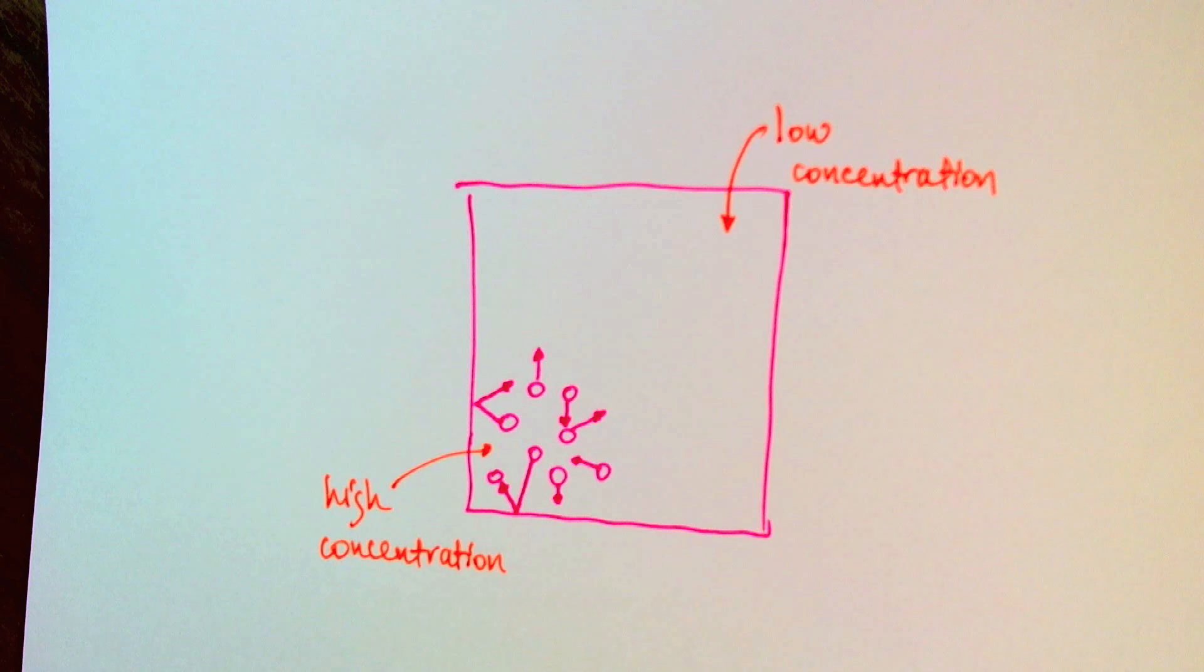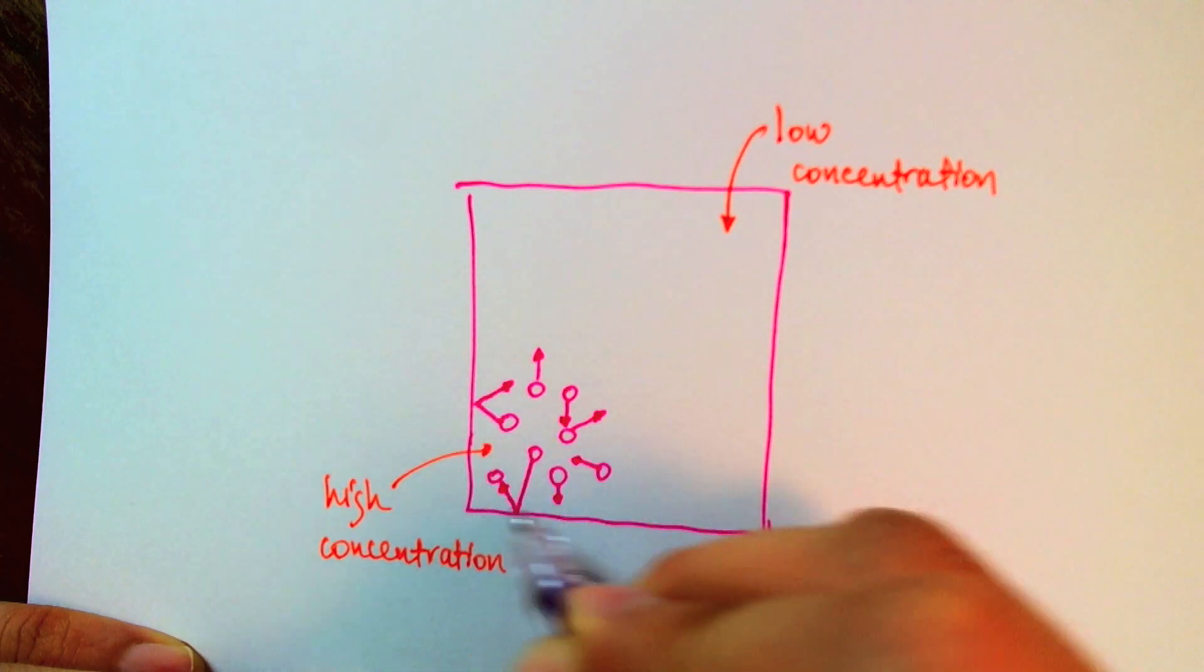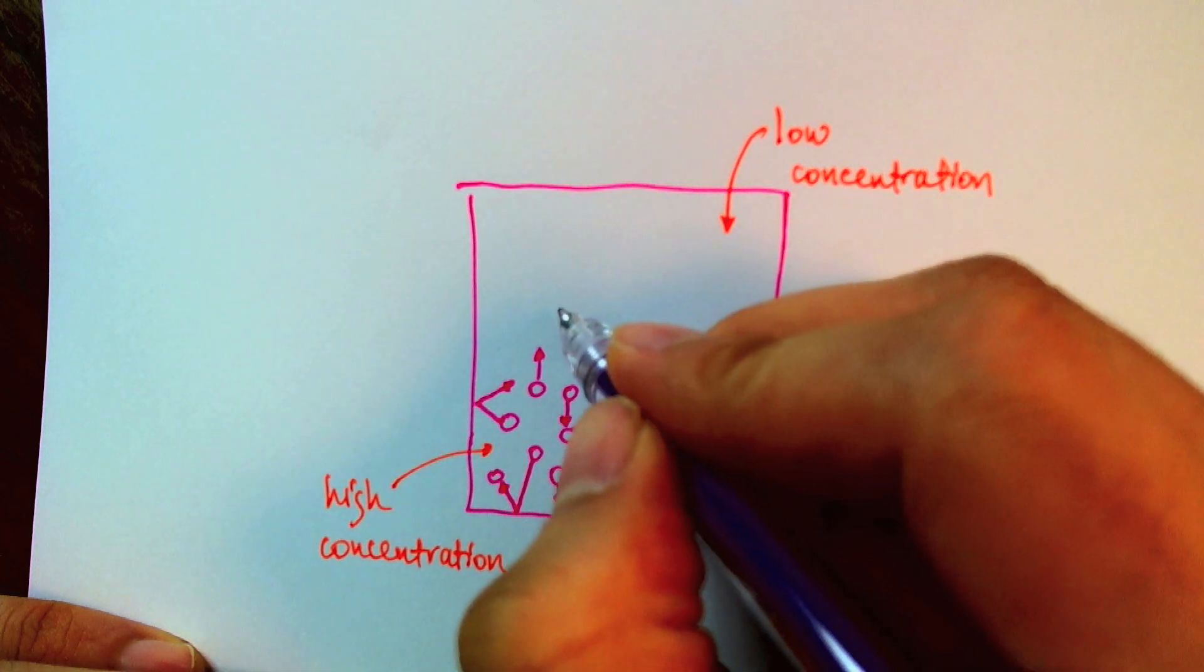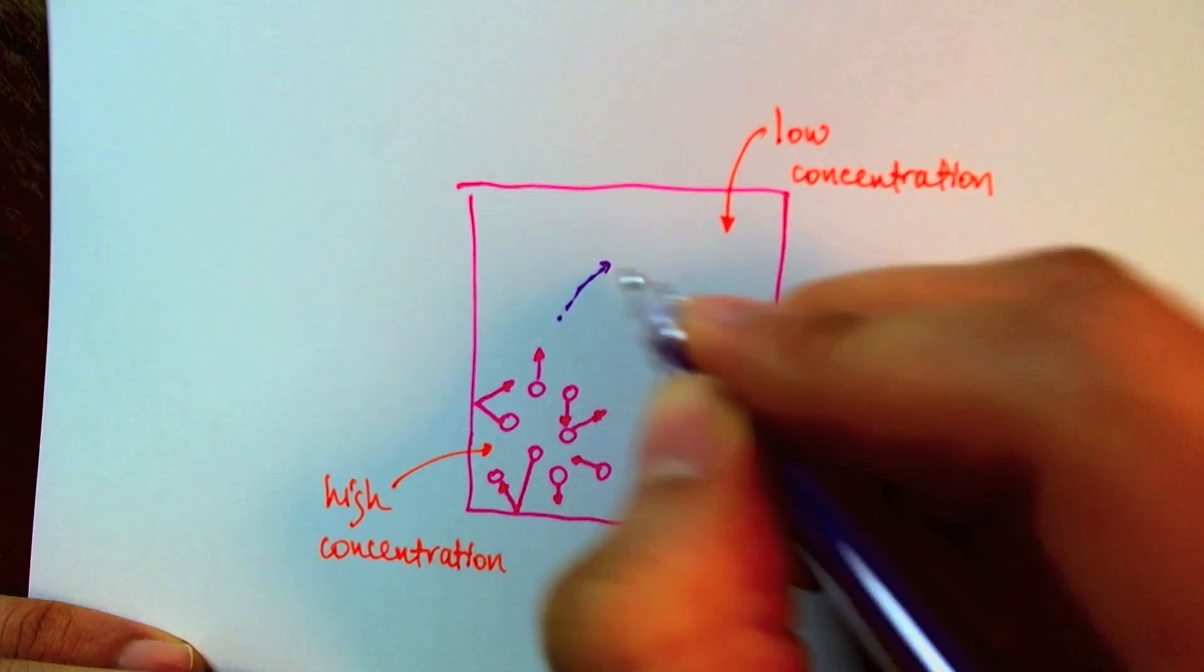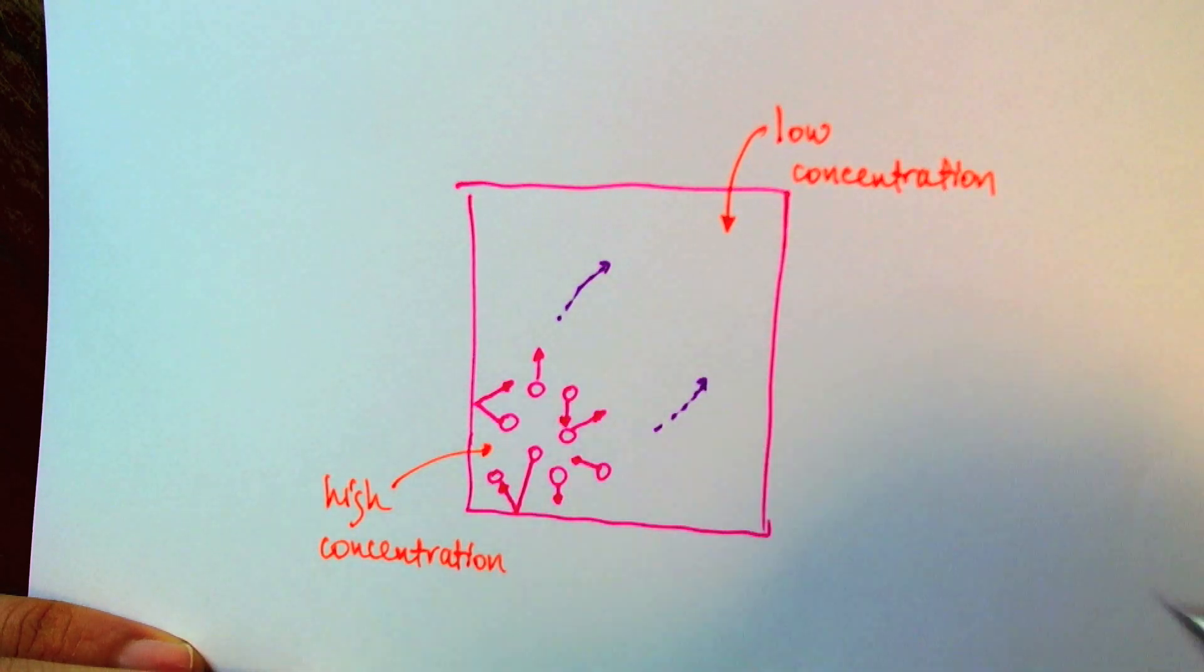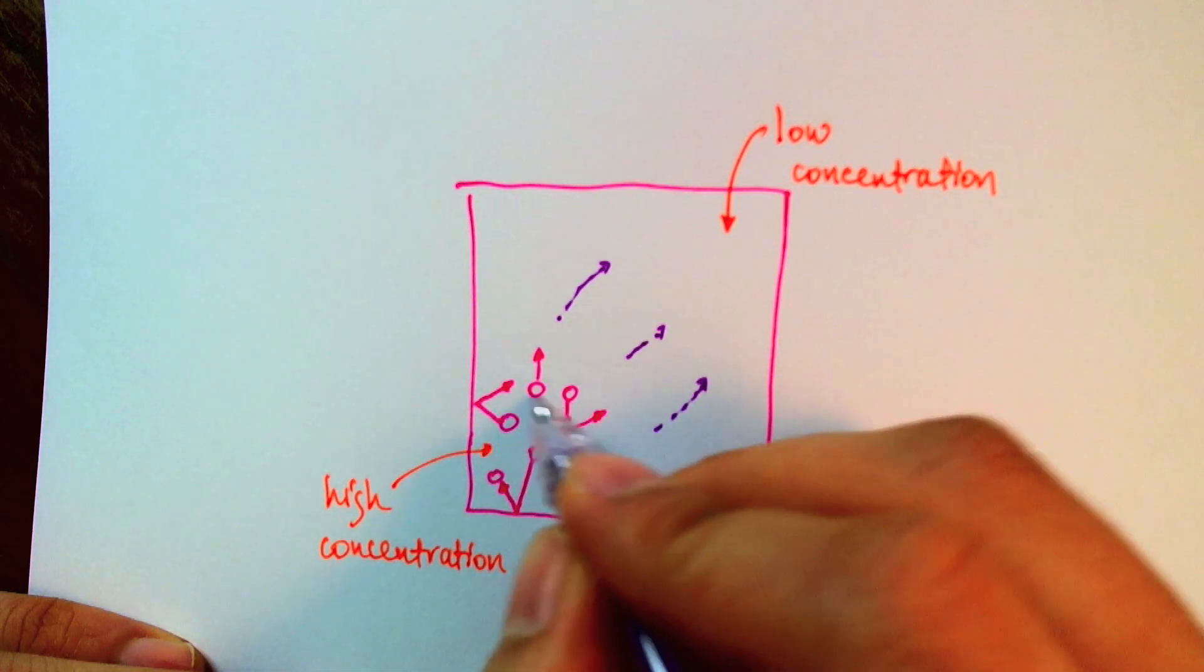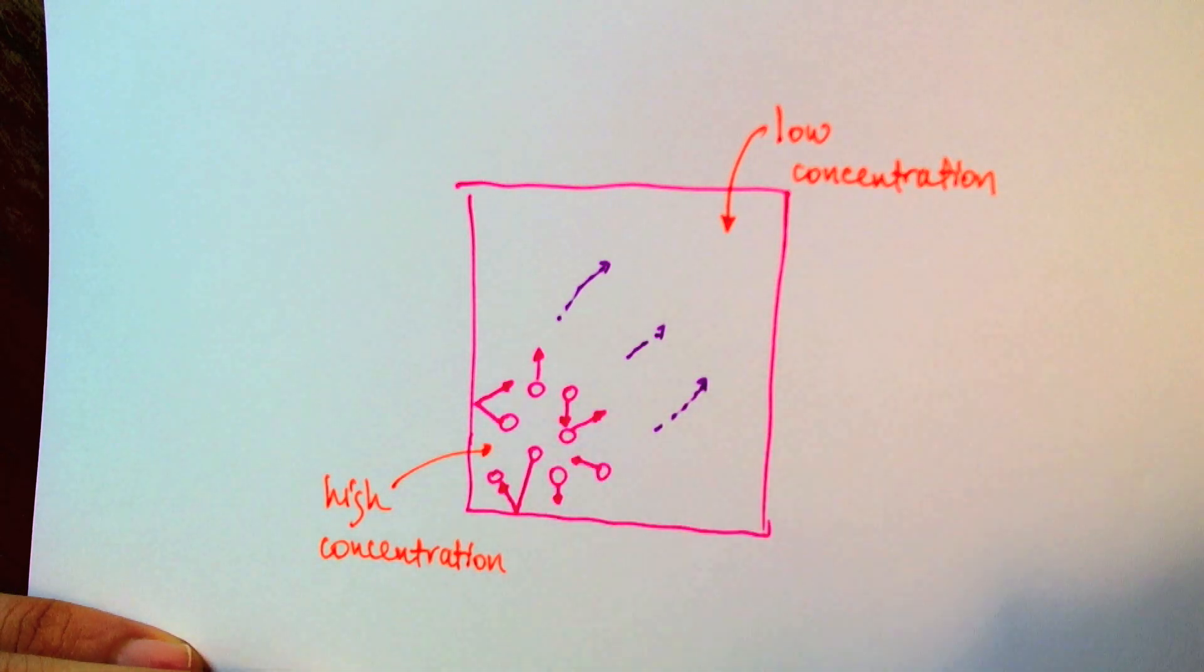As particles move around, since they are constricted by the walls of the container on this side, there's a higher probability for them to kind of drift over in that direction, where it's less crowded. Since it's more crowded here, they're more likely to bounce into each other.